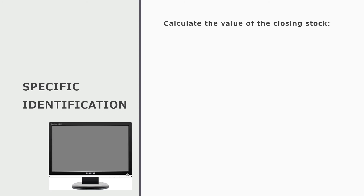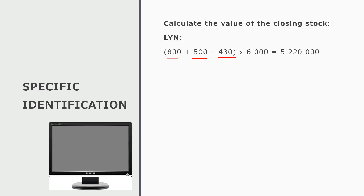To calculate the value of closing stock, we look at each model separately under specific identification. For Lynn: 800 units purchased in the first month plus 500 purchased in the second month, minus 430 units sold. All purchases added together minus what was sold gives us the units remaining on hand at year end. We multiply that by R6,000 — the unit cost from the original invoice when we purchased these items — giving us R5.22 million.